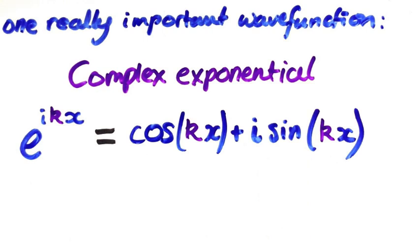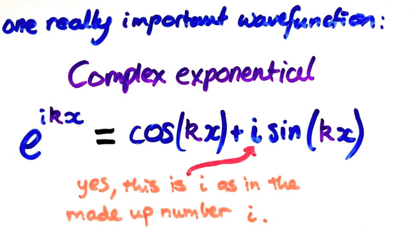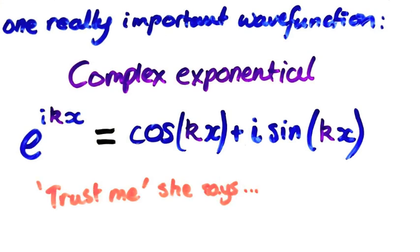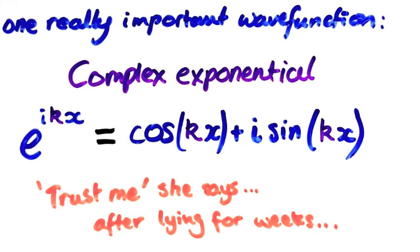Now is probably a good time for me to make an apology. Yes, this wave function has imaginary numbers in it. In general, all wave functions do. I never mentioned it because it wasn't very important up until now. Trust me though, the ideas are still straightforward. So let's go back to our exponential.